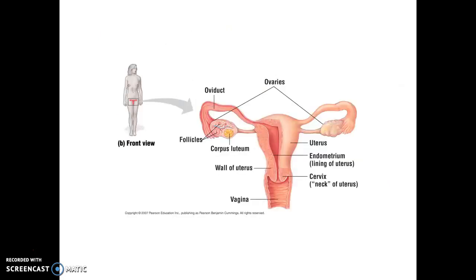The ovaries are a paired structure, one on the right and one on the left, and are also internal structures found within the woman's abdominal cavity. Directly adjacent to the ovaries are the oviducts, also known as the fallopian tubes, which carry materials released from the ovary towards the uterus. The uterus is an organ composed of smooth muscle, often described as being pear-shaped — wider at the top — and then it narrows down at the neck of the uterus, known as the cervix.